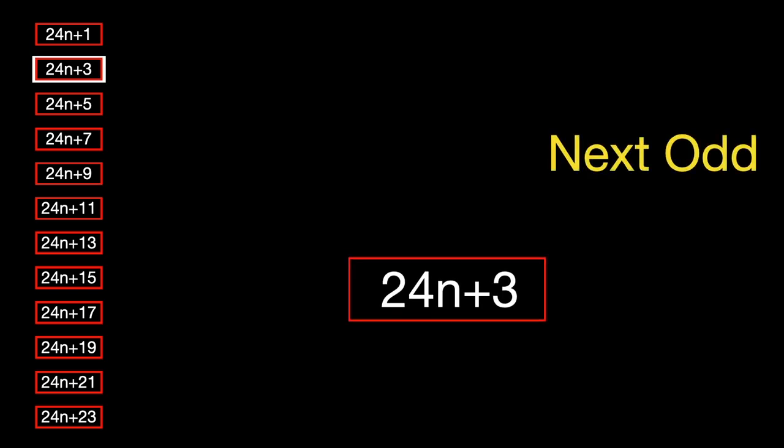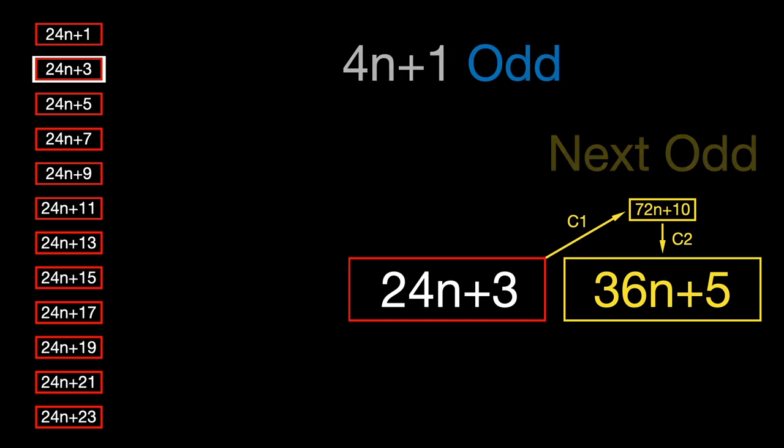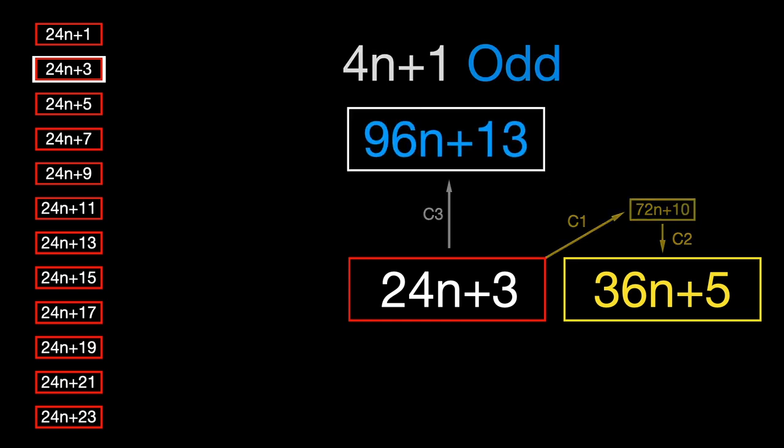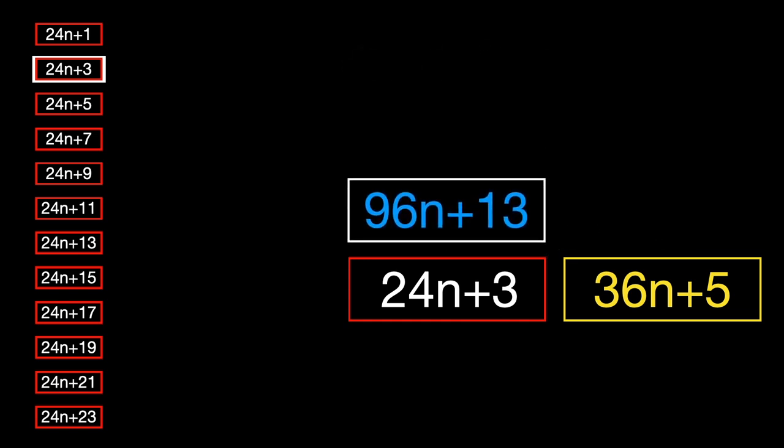3 mod 24 is a case where we have an odd number divisible by 3, so it would have no predecessor through the traditional Collatz rules, but does have a 4n plus 1 predecessor because rule C3 does not depend on divisibility by 3 to create a group.